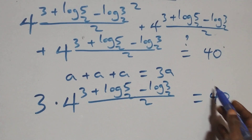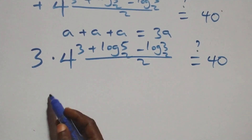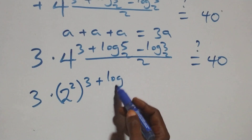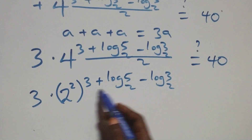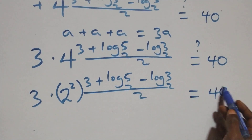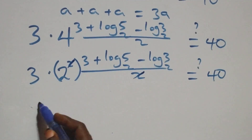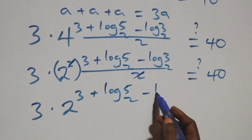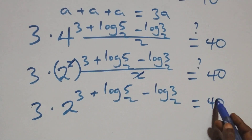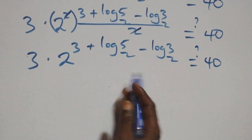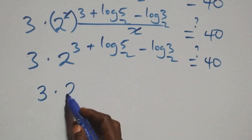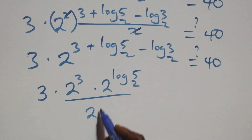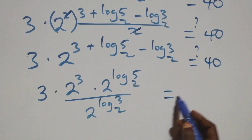We rewrite 4 as 2 squared, giving 3 times (2²) raised to power (3 plus log₂5 minus log₂3)/2, equals 40. The power of 2 and the denominator 2 cancel each other, leaving 3 times 2 raised to power (3 plus log₂5 minus log₂3), equals 40. Applying the law of indices, this becomes 3 times 2³ times 2 raised to power log₂5, divided by 2 raised to power log₂3, equals 40.